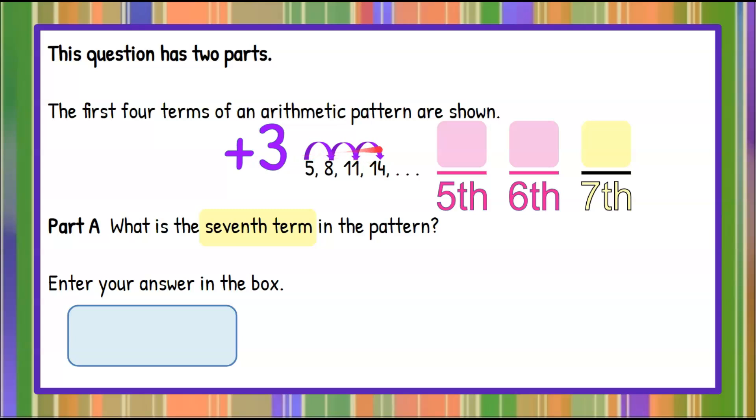14 plus 3 gives me a fifth term of 17. 17 plus 3 gives me 20, my sixth term. 20 plus 3 gives me 23, which is my seventh term, and that's the term in the pattern that I'm looking for.